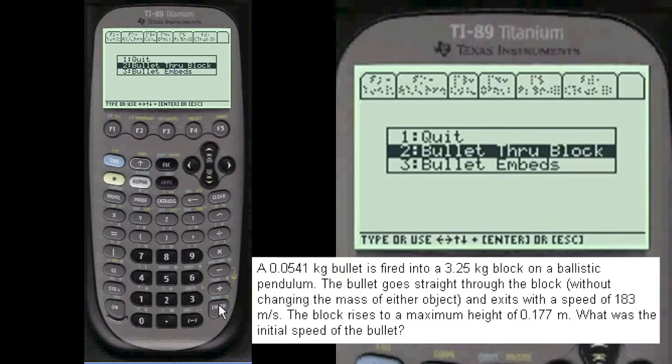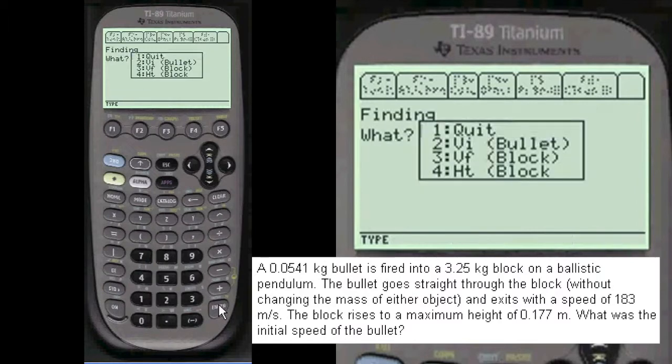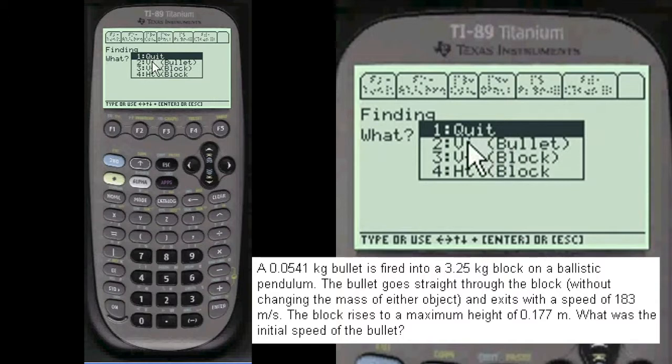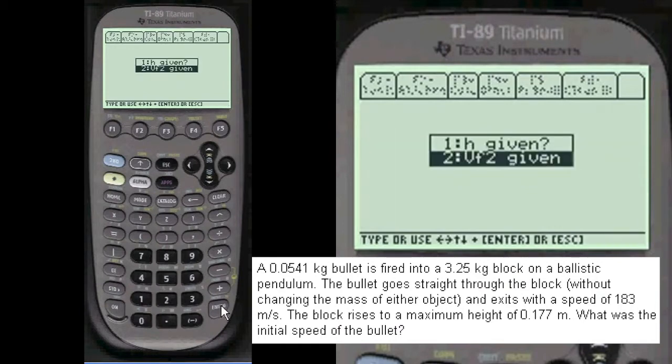And this is a bullet going through the block, so we choose number 2. We can use the numbers before this. And we want to find the initial velocity of the bullet, number 2. It asks you if the height is given. Yes it is. We're going to choose number 1.